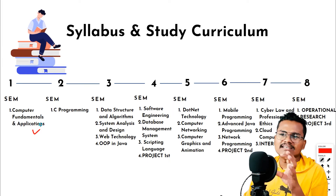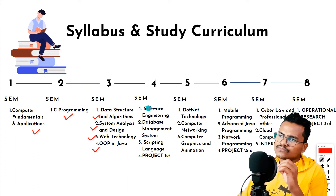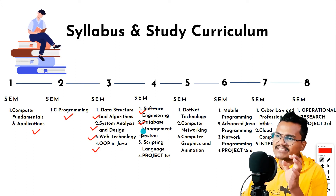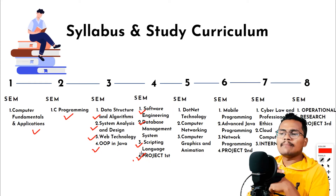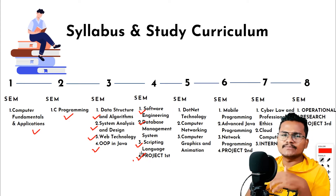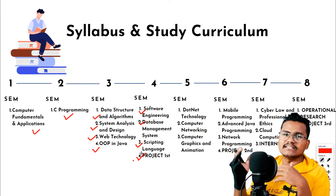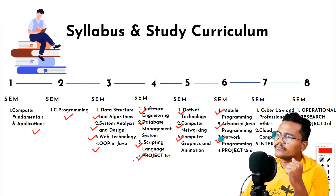In the second semester, you study C Programming — your first programming language. The third semester covers Data Structures and Algorithms, System Analysis and Design, Web Technology, and Object-Oriented Programming with Java. The fourth semester includes Software Engineering, Database Management Systems, Scripting Languages, and related subjects. You also work on projects.